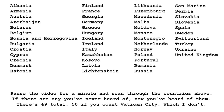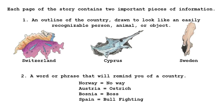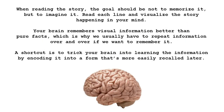There are 49 total, 50 if you count Vatican City, which I don't. Each page of the story contains two important pieces of information: one, an outline of the country drawn to look like an easily recognizable person, animal, or object; and two, a word or phrase that will remind you of the country. When reading the story, the goal should not be to memorize it, but to imagine it.